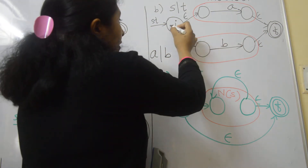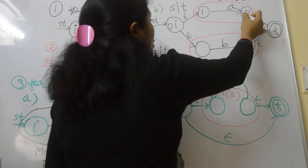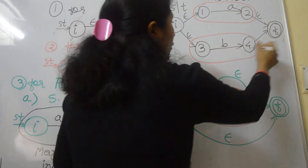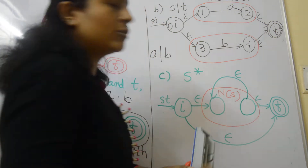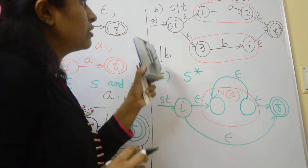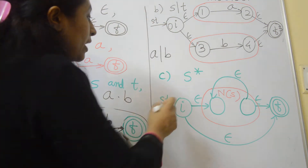The state numbers given are 0, 1, 2, 3, 4, and 5 — total six states as per Thomson's construction.